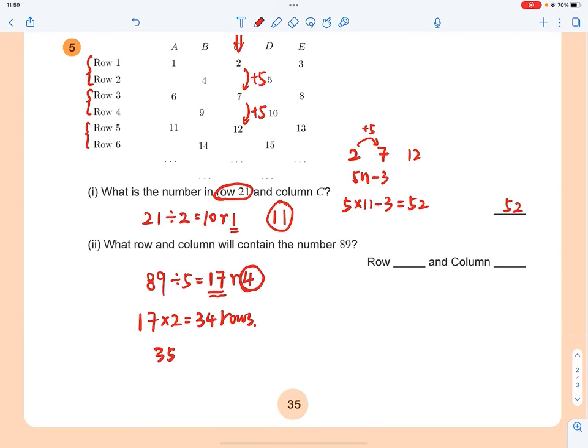Then you go to row 35. In row 35, you got 3 numbers, because 35 is an odd number. In any odd number row, you got 3 numbers. So you'll have 3 numbers to complete row 35.